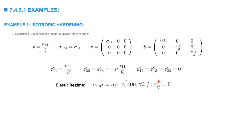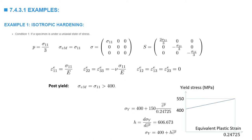This is the condition in the elastic regime when the von Mises stress, which equals sigma_1, is less than the initial yield stress of 400 MPa. Before yielding, the plastic strains are equal to zero. Once the stress exceeds 400 MPa, we need to follow the material curve relating yield stress to equivalent plastic strain to find the plastic strain components.